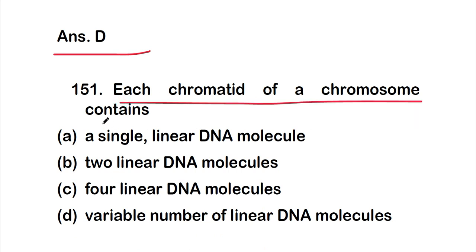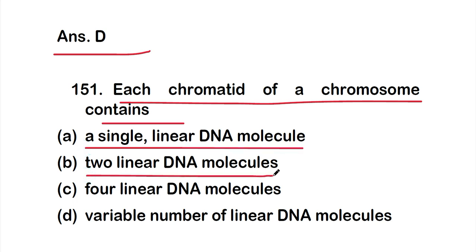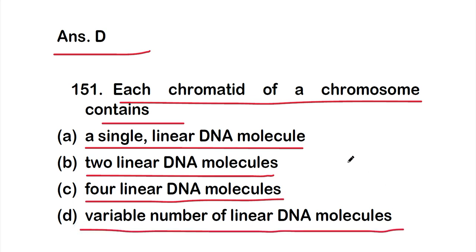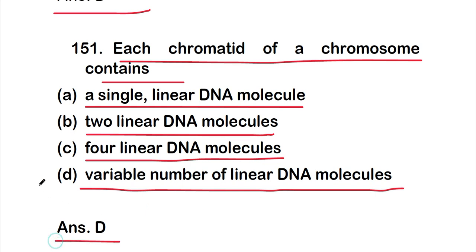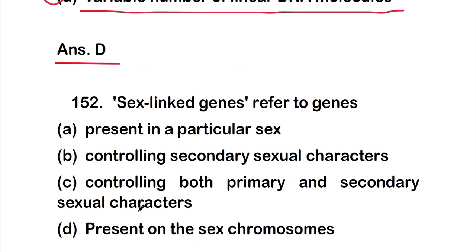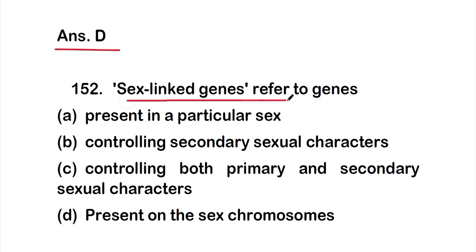Question 151: Each chromatid of a chromosome contains — option A: a single linear DNA molecule; option B: two linear DNA molecules; option C: four linear DNA molecules; option D: a variable number of linear DNA molecules. The correct answer is option D — each chromatid contains a variable number of linear DNA molecules.